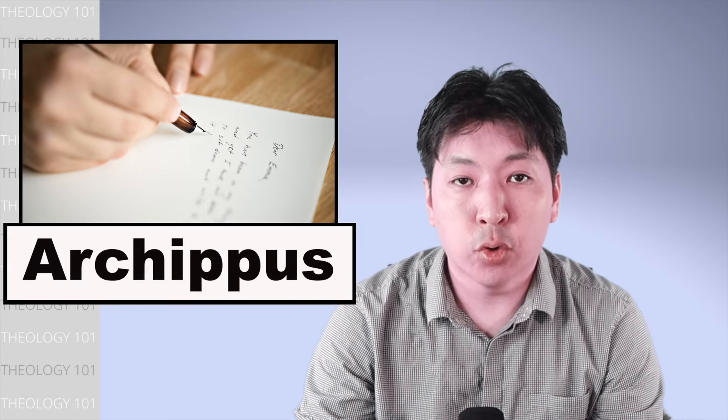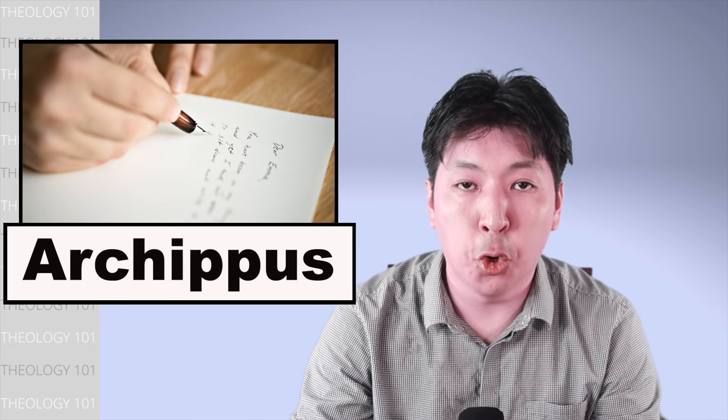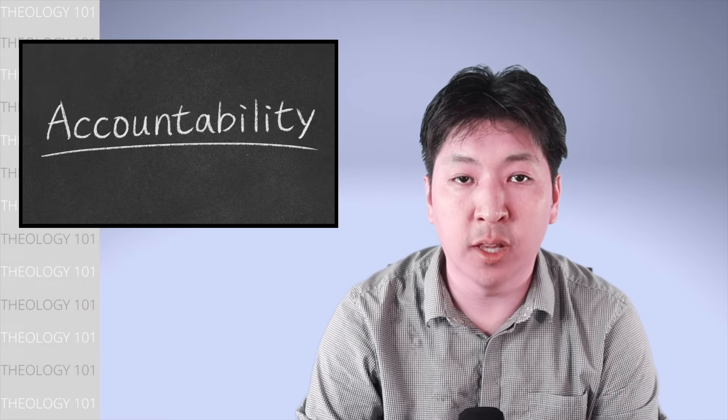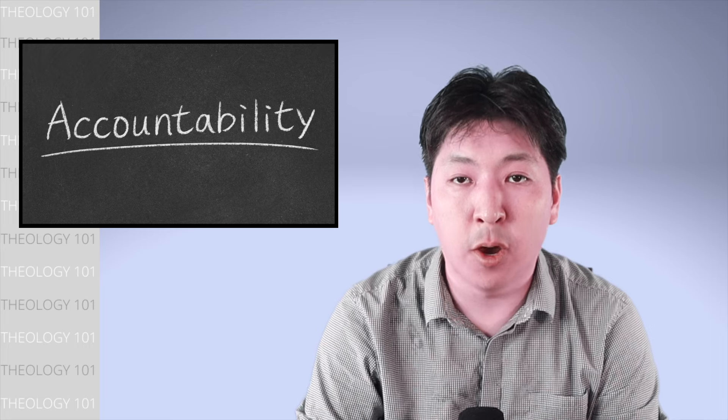Although the letter is written to Philemon, Paul includes other names such as Apphia, who may have been Philemon's wife, and Archippus, which suggests that this letter was probably read to a larger group of people who met in Philemon's home as a church.